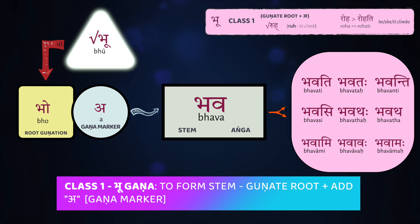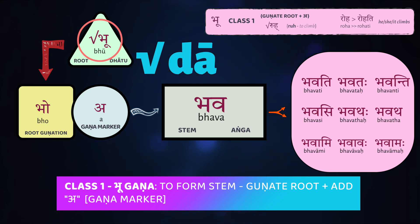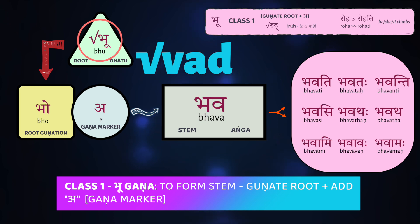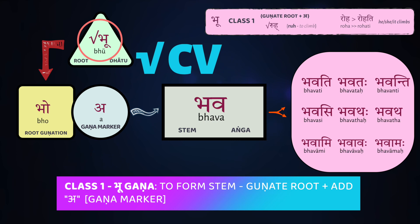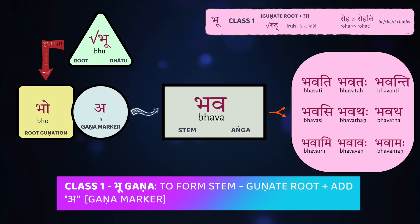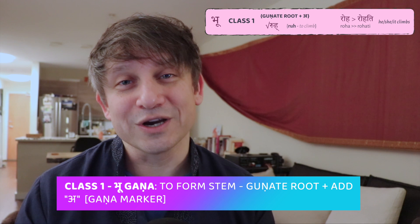First, you start with the verb root, the dhātu. Remember all verb roots are going to be one syllable exactly, and they're going to look like either just a vowel, a consonant and a vowel, or a consonant-vowel-consonant cluster — so V, CV, VC, or CVC form for a dhātu. To make a stem, you take that root and you guṇate the vowel found in the root. Then you add the agāra after the root, and you have your stem. You guṇate the root and add the guṇa marker 'a'.